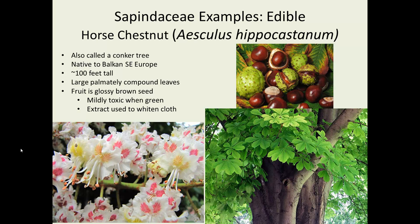Horse chestnut is quite a famous tree in Europe, and some are grown in the United States. Aesculus hippocastanum is not native here. The very distinctive chestnuts are used in a game called Conkers, which is a bit like playing marbles and very popular with children. It's a lovely tree — even the leaves are attractive on their own, and the flowers are quite attractive too. The fruit is mildly toxic when green, but if treated it can be eaten. An extract has been used for years to cleanse and dye fabrics like linens and other woven items.